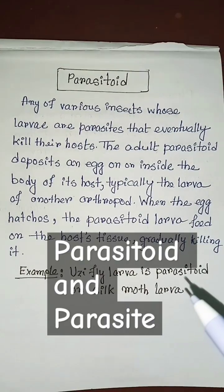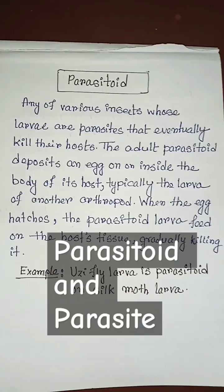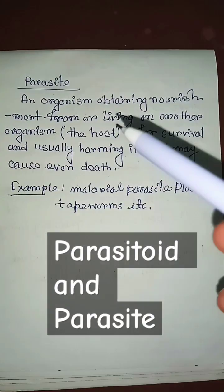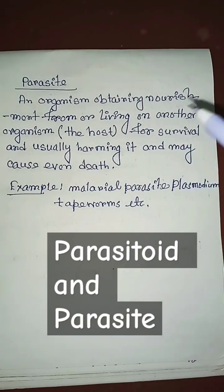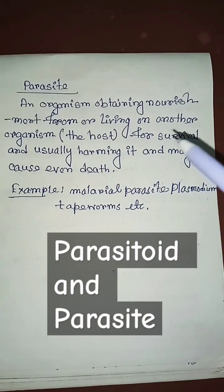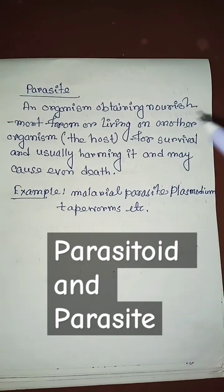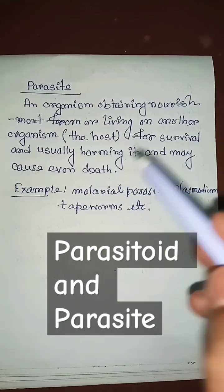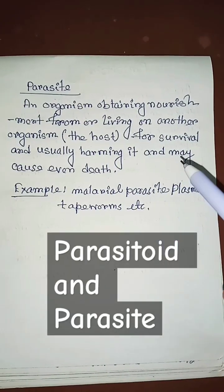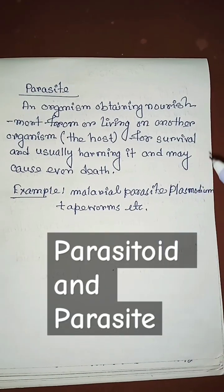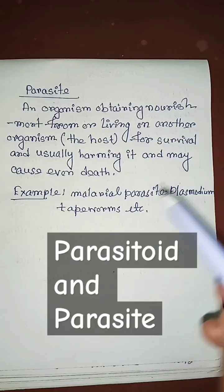Example: Uzi fly larva is parasitoid on silk moth larva. What is Parasitoid? An organism obtaining nourishment from or living on another organism — the host — for survival, and usually harming it, and may cause even death, is called Parasitoid.